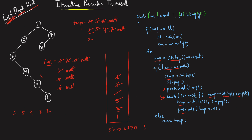Again, curr is still null, so temporary = st.top().right. This time the top is one, and one's right is seven, so temporary becomes seven. Temporary is not null, so curr is reassigned to seven. Stack pushes seven and curr goes to eight via curr.left. Stack pushes eight, then curr.left becomes null.